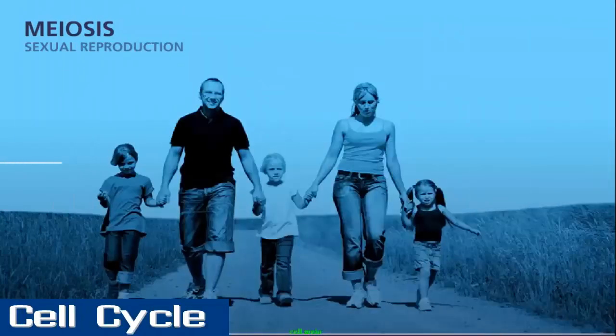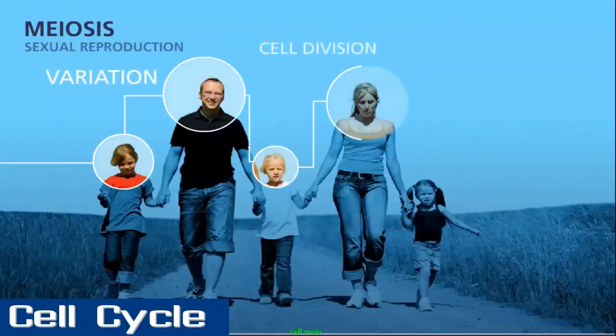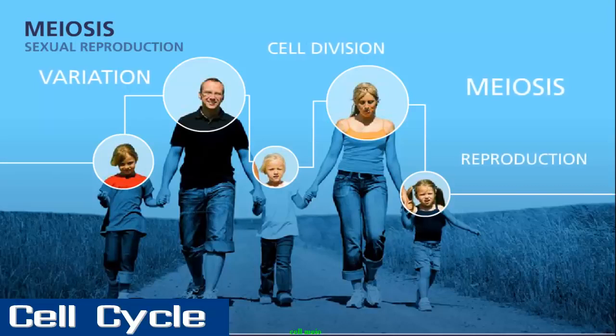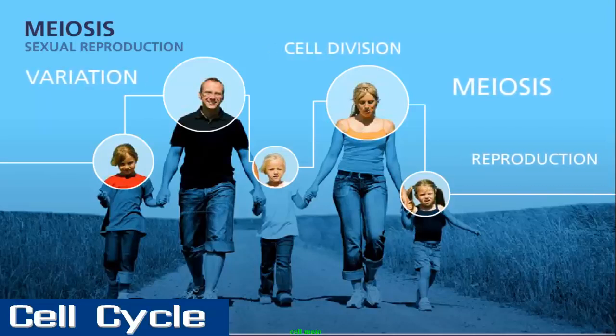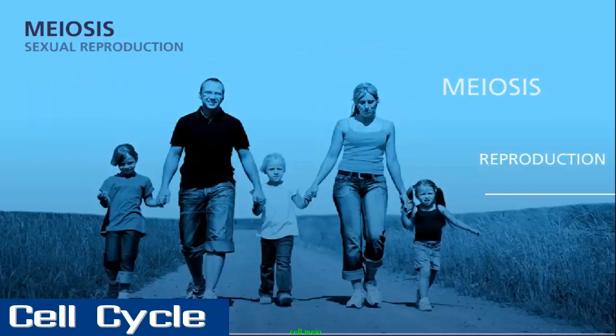Have you ever wondered why children do not look exactly like their parents, or why some siblings look so different from each other? The answer lies in the process of meiosis, which generates the gametes for reproduction.